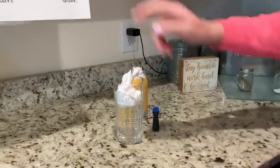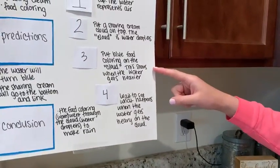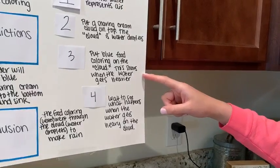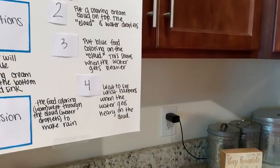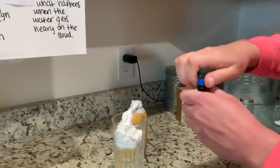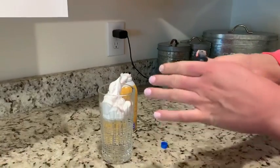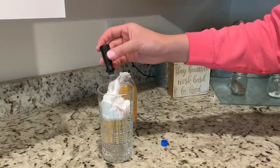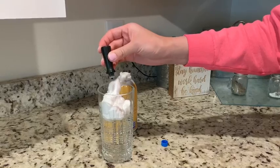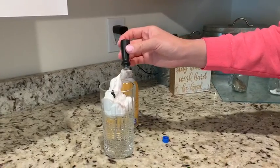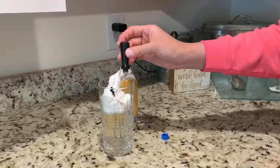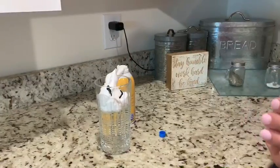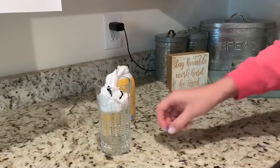My cloud is pretty big and it's sitting right on top of the water, as you can see. Step number three: put blue food coloring on the cloud. This shows when the water gets heavier. So I'm going to take my food coloring and put a little bit on top, and we are going to see what happens.